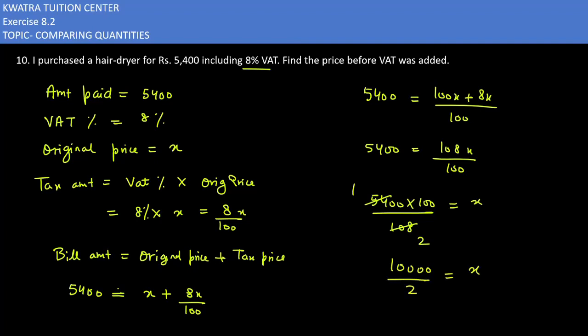Dividing it with 2. How much is your answer? It is 5000 as X. So what is the original price?